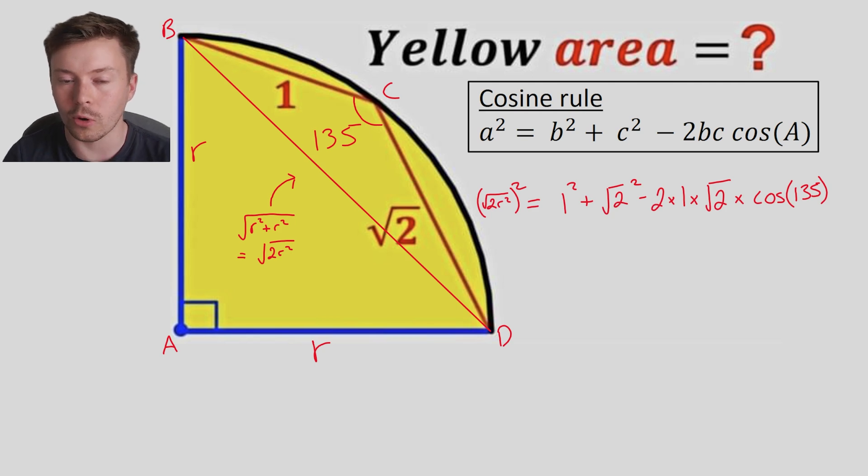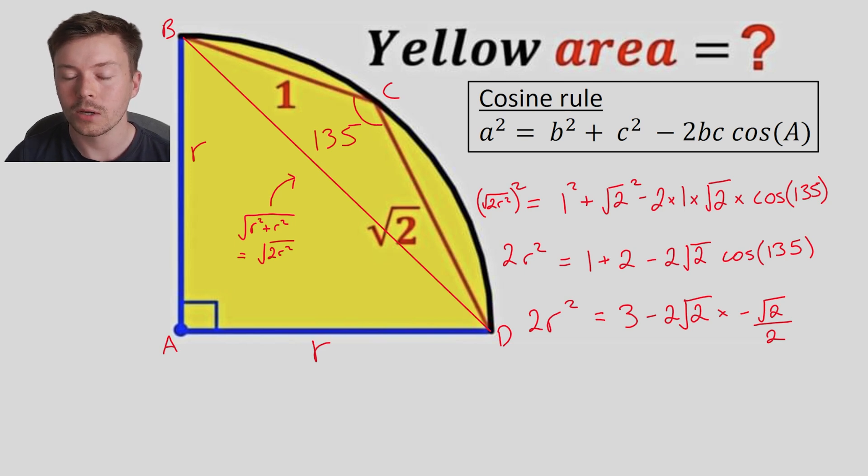So substituting into that, we have the square root 2r squared, which is a and that's going to be squared, is equal to b squared, which is 1, or root 2 doesn't matter, plus root 2 squared, minus 2 times b times c, so 2 times 1 times root 2, times by cos of the angle, which is 135. We're going to simplify that. Simplify the square parts at least, so we get 2r squared is equal to 1 plus 2 minus 2 root 2 cos 135. We're going to calculate, cos 135 is negative root 2 over 2, and we've now got to multiply that by minus 2 root 2, and we've simplified the 1 plus 2 to 3. I'm going to cancel the root 2s and the 2 and over 2, so negative 2 root 2 times negative root 2 over 2 will give you positive 2, and so we've got 2r squared is equal to 3 plus 2, gives us 2r squared is equal to 5.